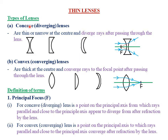Basically we have two major types of lenses. One, we have what we call the concave or the diverging lenses. Two, we have what we call the convex or the converging lenses. A concave lens is also called a diverging lens because it usually diverges all the rays of light after refraction. Concave lenses are usually thin or narrow at the center, and they diverge rays after passing through those particular lenses.